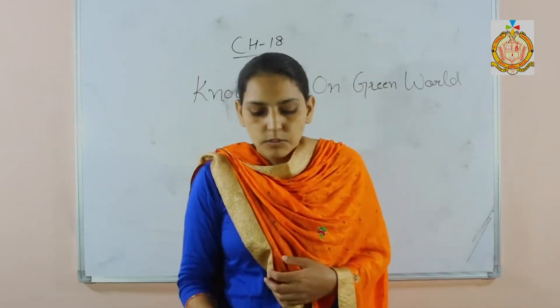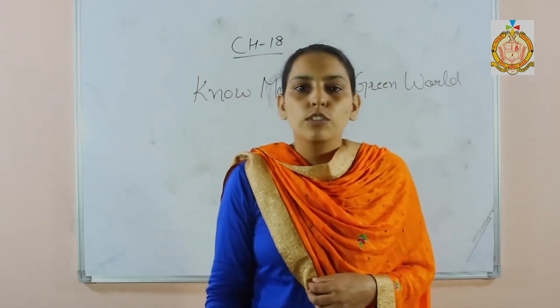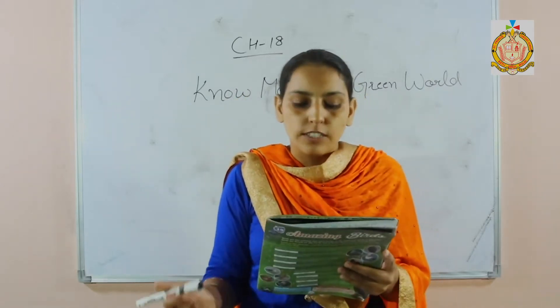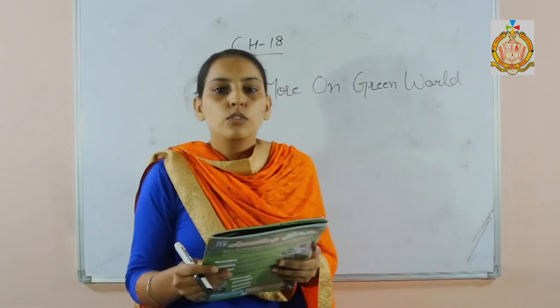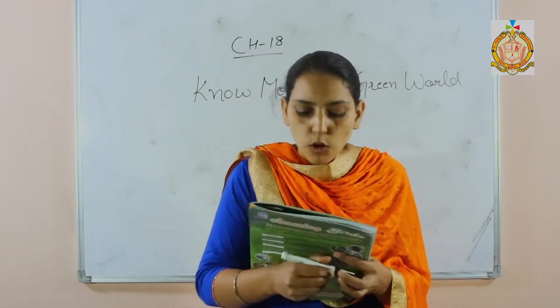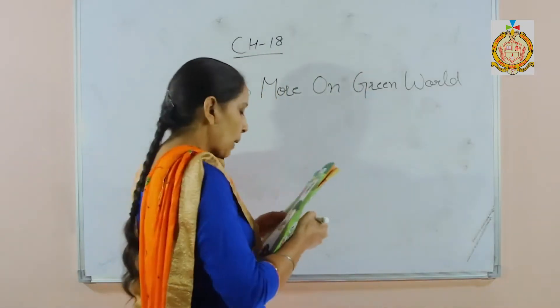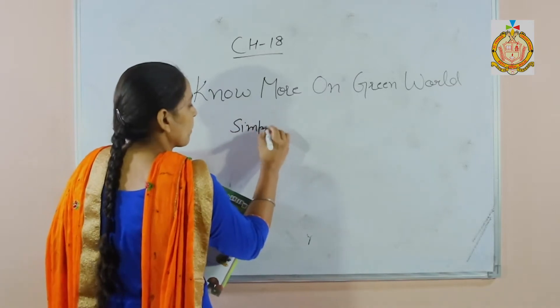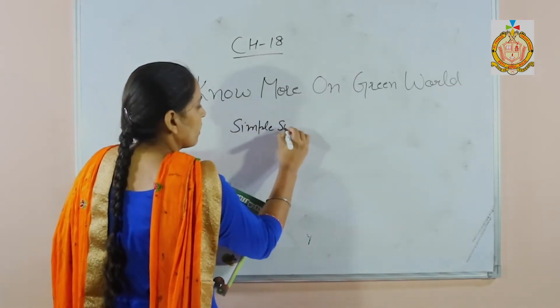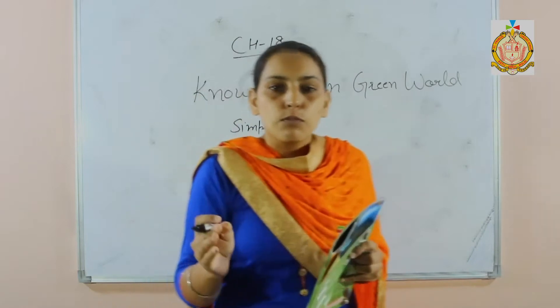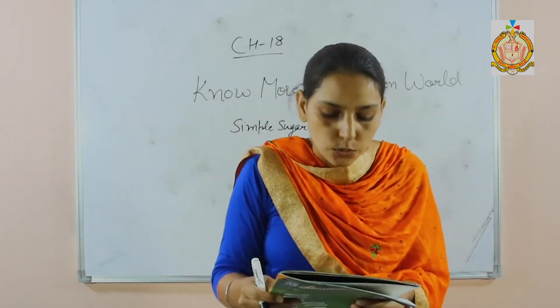Hello students, today we are going to start GK. Our chapter is 18, that is 'No More on Green World.' Our first question is: what is the form of food prepared by the plants? That is simple sugar. Plants make their food in the form of sugar.